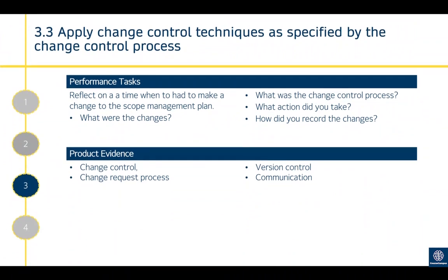Criterion 3.3 is to apply change control techniques as specified by the change control process — following the change control process specific to your programme and organisation. Normally it involves some form of change control committee which regularly meets to review change control requests, and will then either approve, deny, or choose to review them at a later date. Reflect on the time you had to make a change to the project plan: what were the changes, what is your change control process, and how did you comply with it and initiate the process? How did you record the changes?